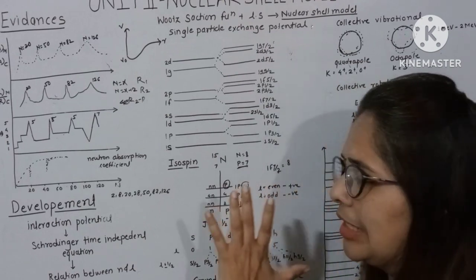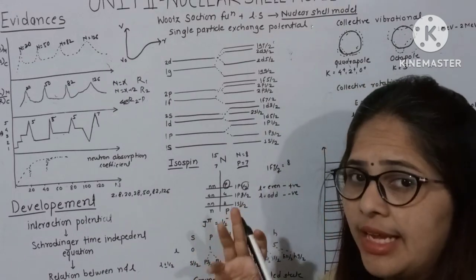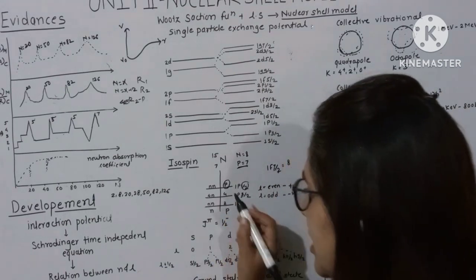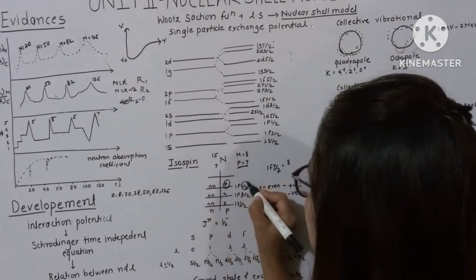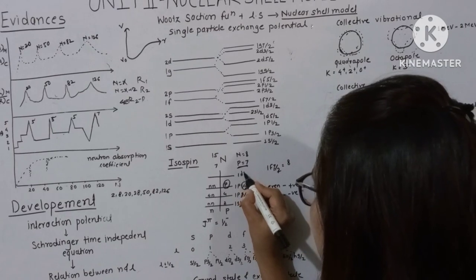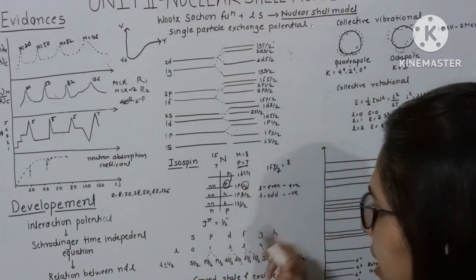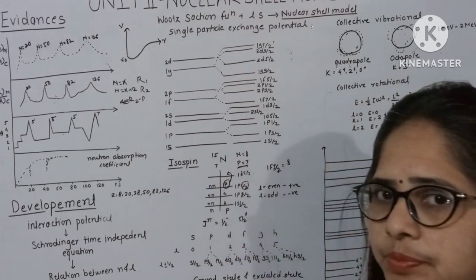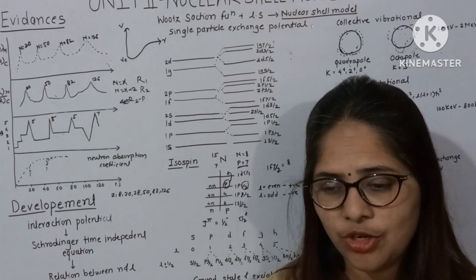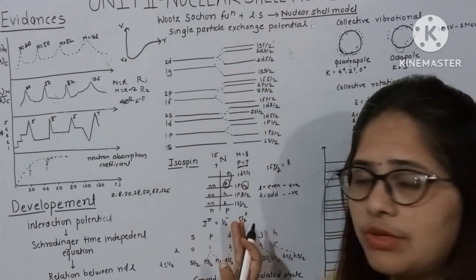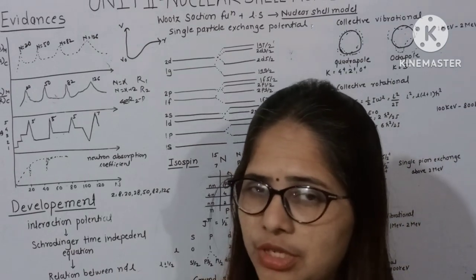If some amount of energy is applied to the nitrogen-15 nucleus, the unpaired proton may jump to the next orbit above, which is 1d₅/₂ (or 1p₅/₂ as mentioned). The spin-parity of this excited state would then be 5/2⁺. So using the nuclear shell model, the spin-parity of any nucleus in its ground state or excited state can be evaluated.